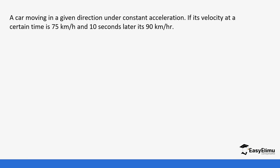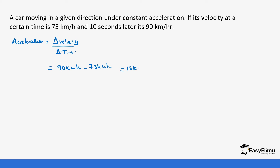An example: a car is moving in a given direction at constant acceleration. Its velocity at a certain time is 75 kilometers per hour, and 10 seconds later it is 90 kilometers per hour. We are asked to calculate the acceleration. We write the formula: acceleration equals change in velocity over change in time. The change in velocity is the final 90 km/h minus the initial 75 km/h, which gives us 15 kilometers per hour.